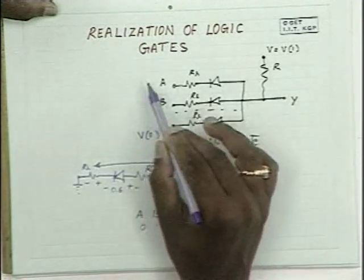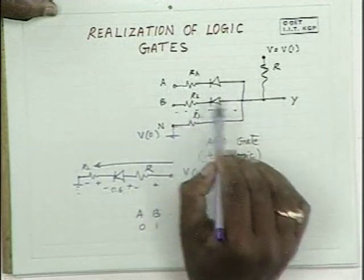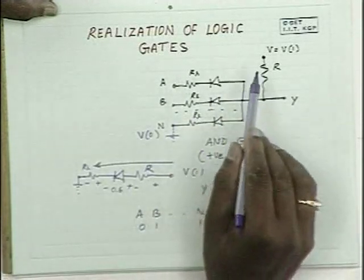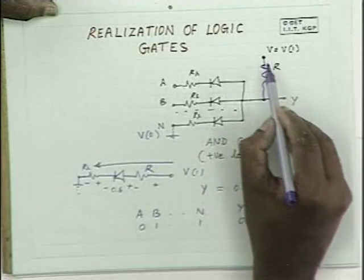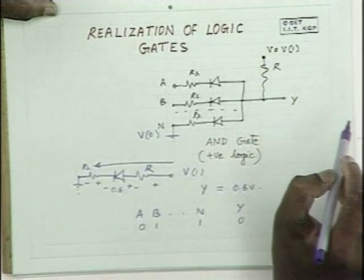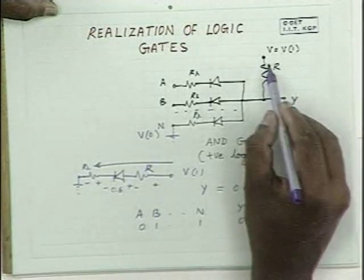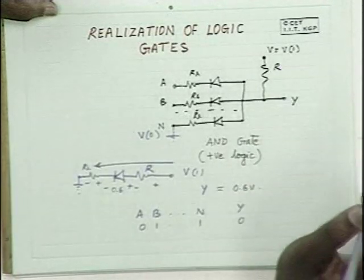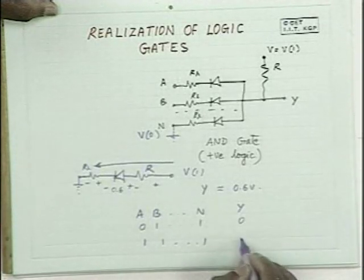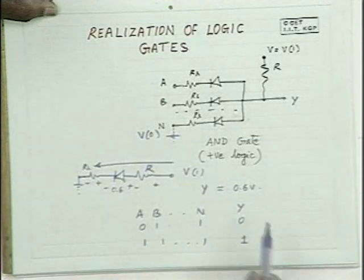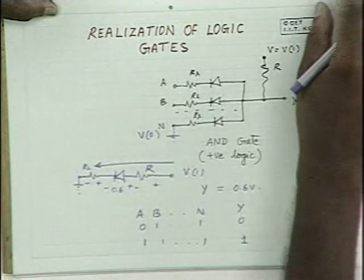When all the inputs are logic level 1, the applied voltage is V1 everywhere, and the supply is also V1. Therefore, there is no bias across the diodes, and no current flows. If a load resistance is connected and is very high, negligible voltage drops across R, and the output voltage is almost equal to V1. Therefore, when all inputs are 1s, the output is 1. Hence, this circuit acts like an AND gate for positive logic.